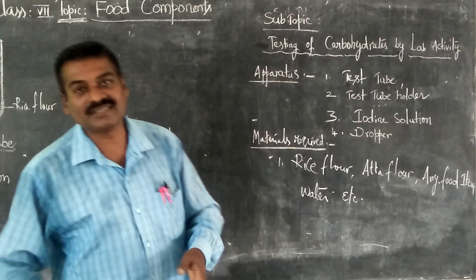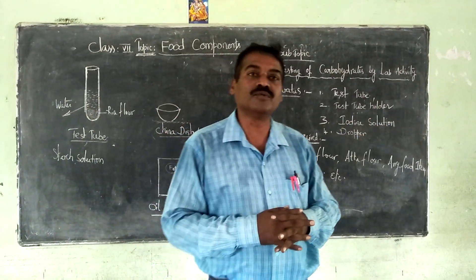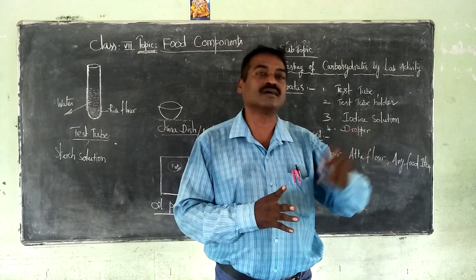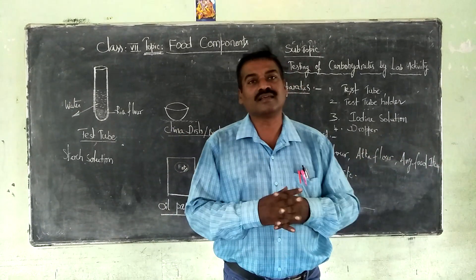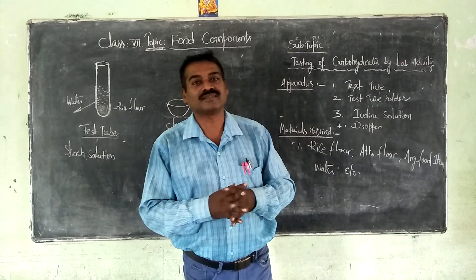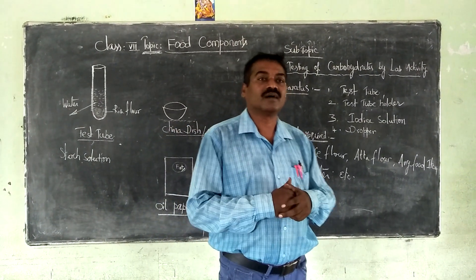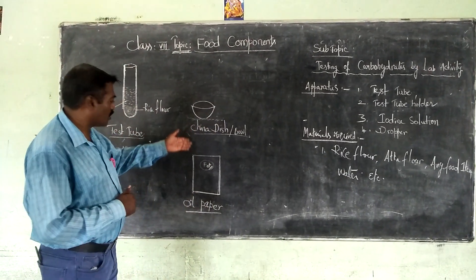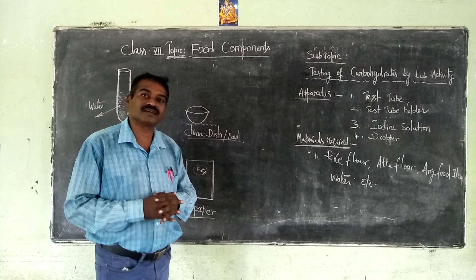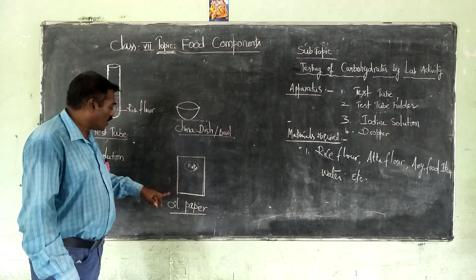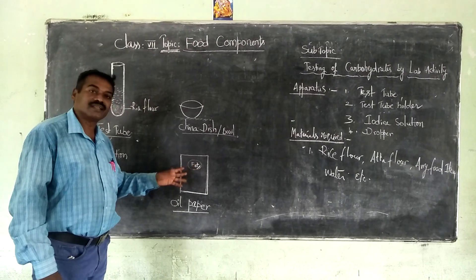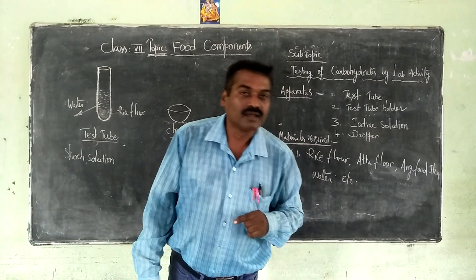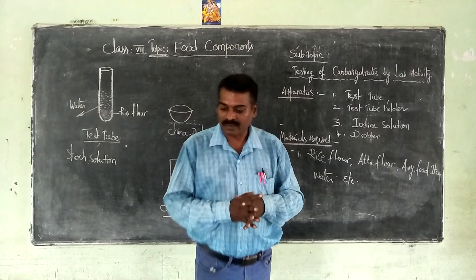For materials, you can use whichever is easily available — any daily food preparation, vegetable, or anything we can select and easily test. Apart from that, I would also like to demonstrate how to test for fats. For fats, we require one paper preparation. From that we can try to understand the food component of fats. Now let us start the lab activity.